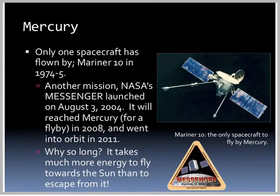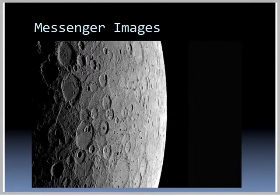Only one spacecraft has flown by Mercury — Mariner 10, in 1974–75. There's another mission called Messenger that was launched on August 3, 2004. It reached Mercury for a flyby in 2008 and went into orbit in 2011. It actually takes much more energy to fly toward the Sun than away from it. Messenger sent us many great images of the surface of Mercury.